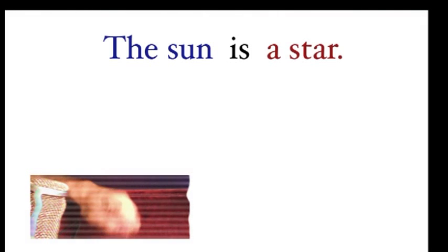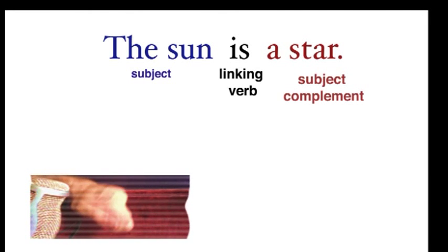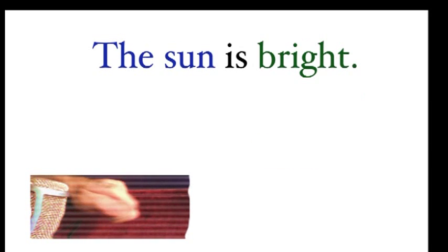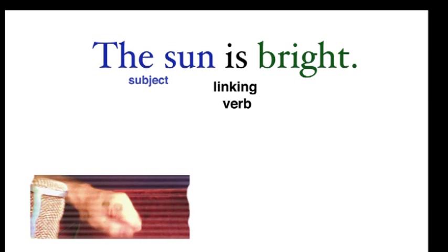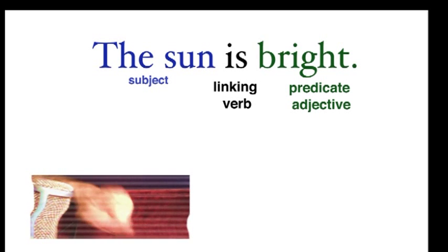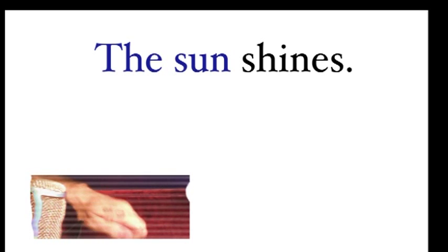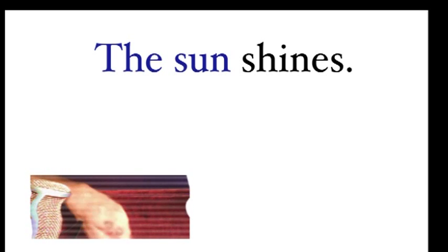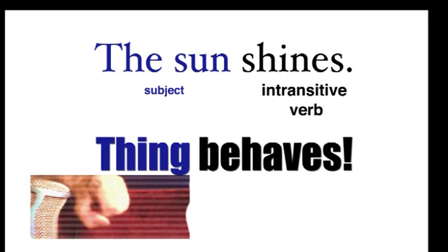Okay, see if you can name the pattern. The sun is a star. Linking verb and subject complement — biggest thing! The sun is bright. Linking verb and predicate adjective — thing is good! The sun shines. Intransitive verb — thing behaves!